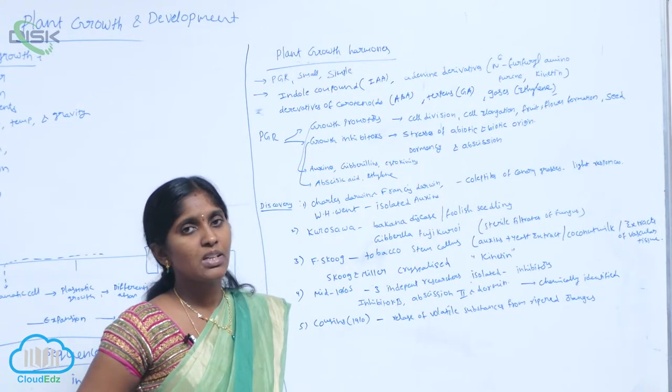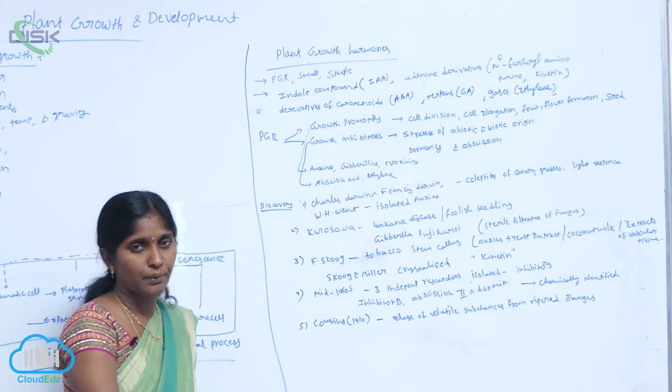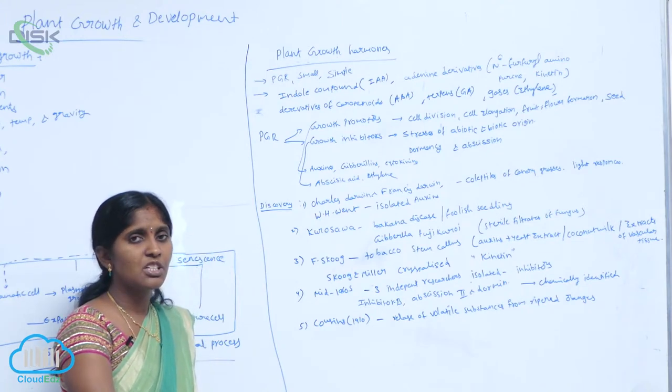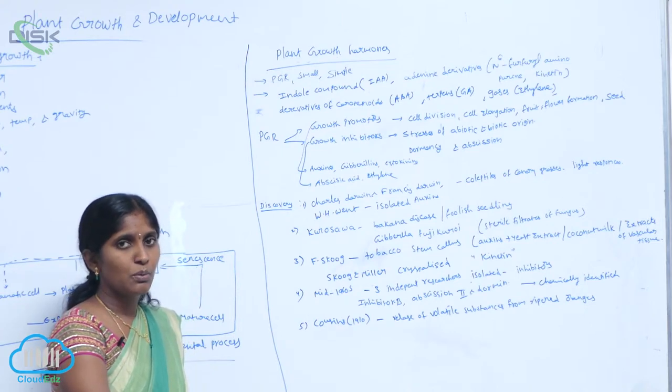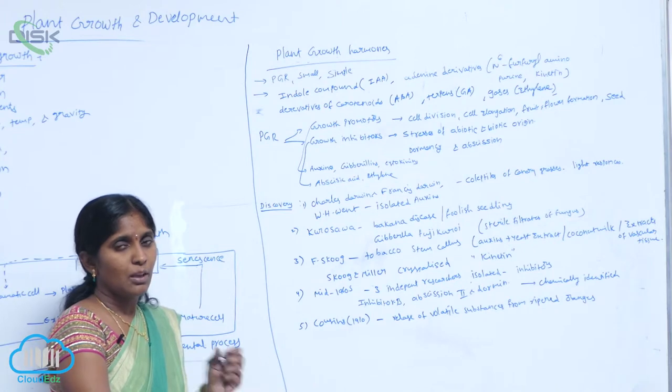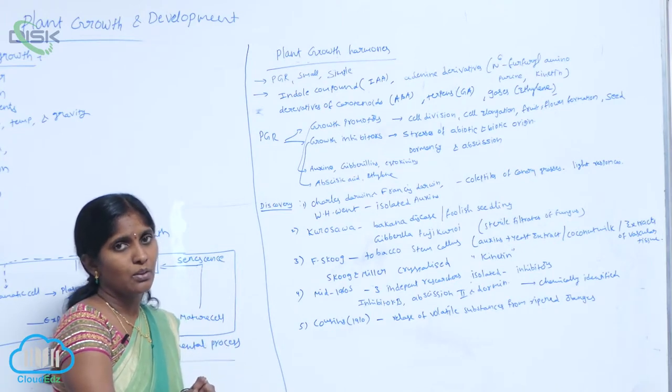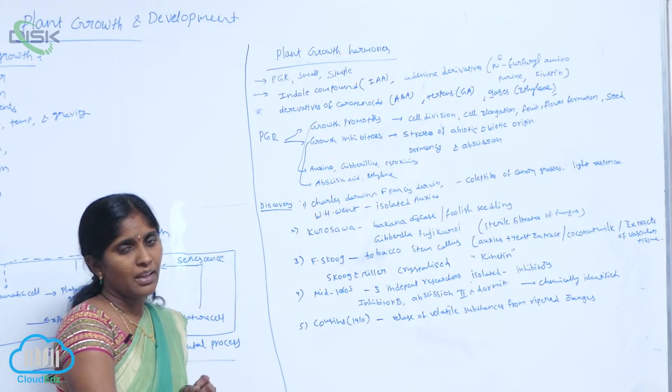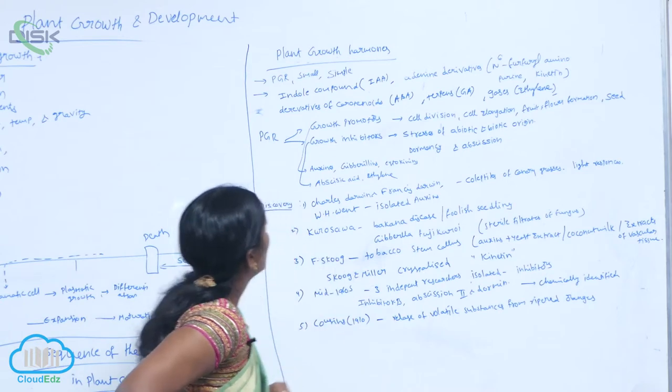Generally, in water scarcity condition, ABA is released effectively. The concentration of ABA increasing in the stomata means the stomata is capable of closing itself. Then, through the stomata, the air is not transmitted.